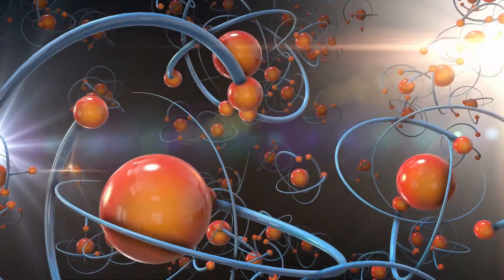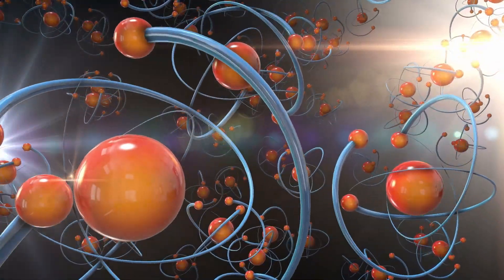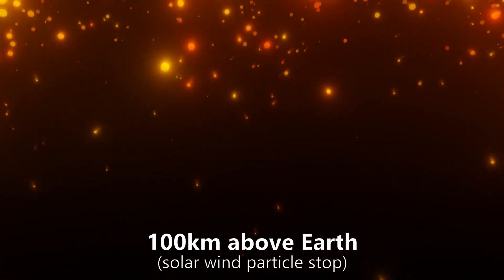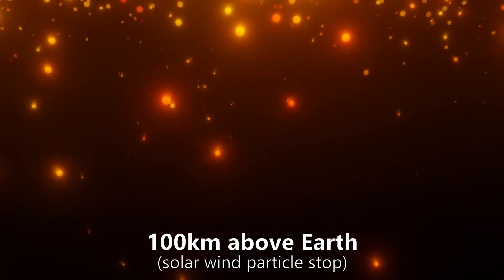The closer they will get to the Earth, the more atoms are in the atmosphere. So the particle collides with more and more atoms, transmitting some of its energy to each and gradually traveling more slowly, finally coming to a stop at around 100 kilometers above the Earth.